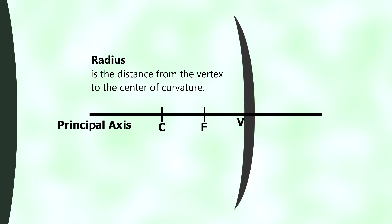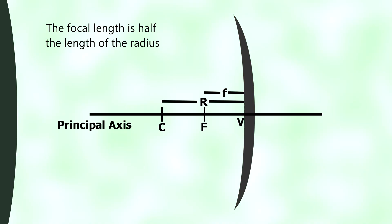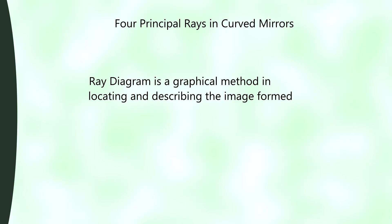The distance from the vertex to the center of curvature is called the radius R. The distance from the vertex to the focus is called the focal length F, and the focal length is half the length of the radius. Aside from these parts, we must also know the different rules in ray diagrams for curved mirrors. There are four principal rays in concave and in convex mirrors. A ray diagram is a graphical method for indicating and describing the image formed.